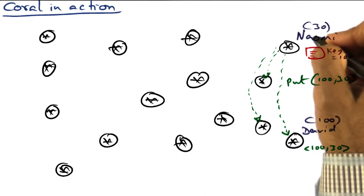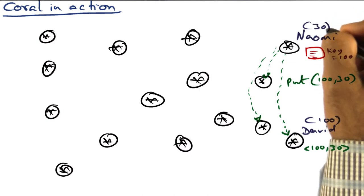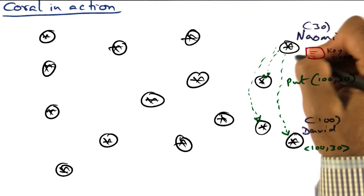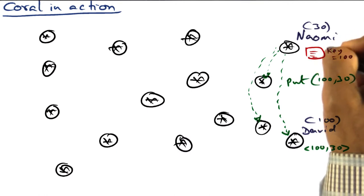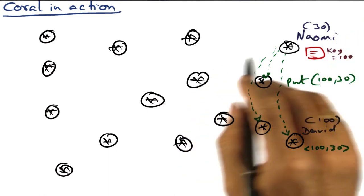So now Nomi wants to put the key 100 and the value 30, indicating that this node has the content corresponding to this key 100. She wants to put it out on the internet.